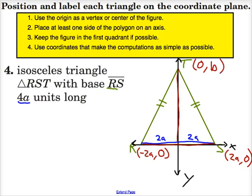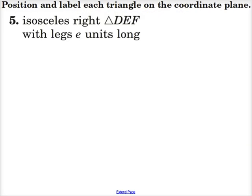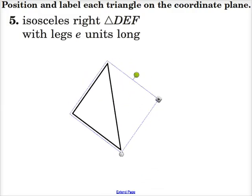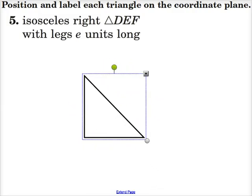Let's try another. So here we are to position and label an isosceles right triangle. We want its positioning to fit so that the sides are on axes. Let me just change the color of this thing a bit. So we have our isosceles right triangle. These segments would be congruent and we have a right angle.